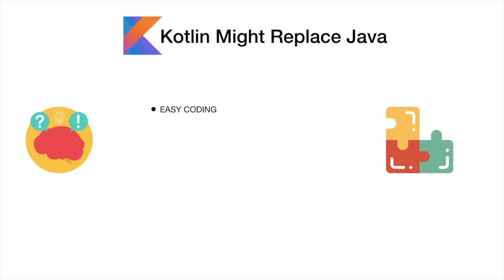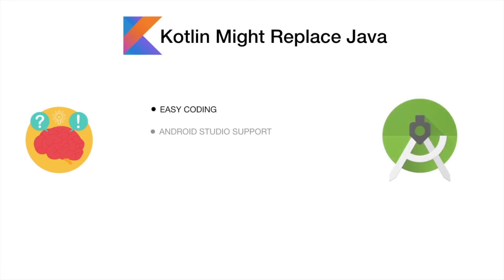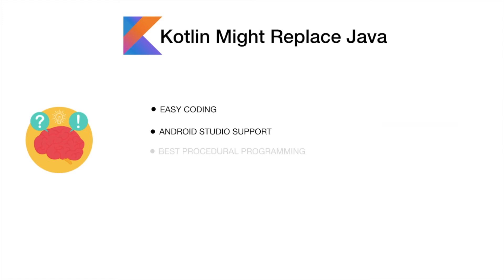You will be able to work with Java and shift to Kotlin. This is called Android Studio support. If you are familiar with JetBrains IDE, you will be able to do the same. Even if you are familiar with iOS development, almost all IDEs support Kotlin. Android Studio supports Kotlin with easy procedural programming.